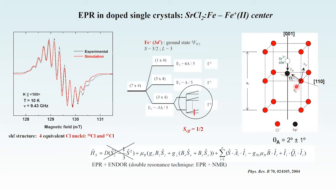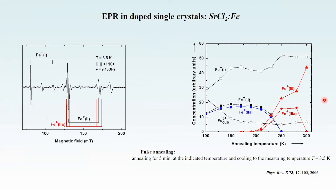In this structural model, the iron+ ion is moved from its initial position to almost the center of the square formed by four chlorine ions. This structural model suggests a less stable defect. Regarding thermal stability, we performed pulse annealing experiments and demonstrated a higher stability for the defect where the iron is in the center position. With these examples, we have shown the richness of information from single crystal EPR experiments.